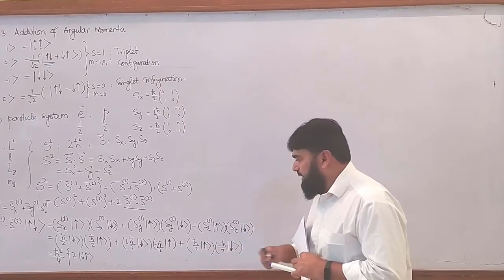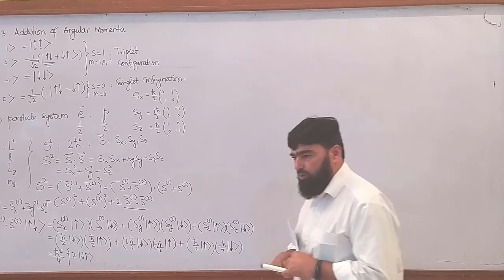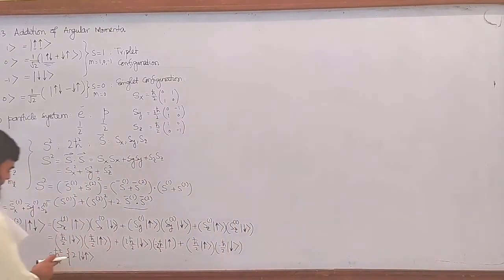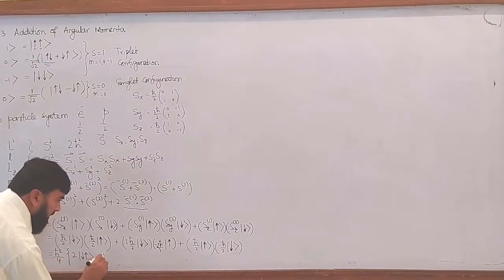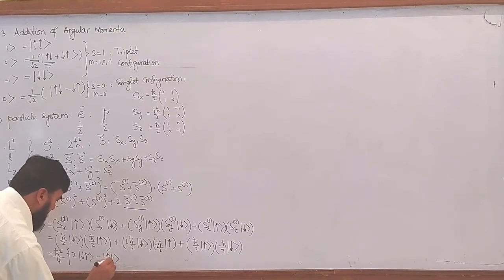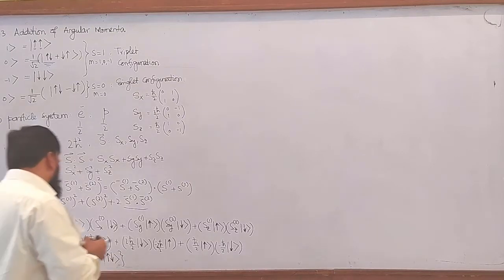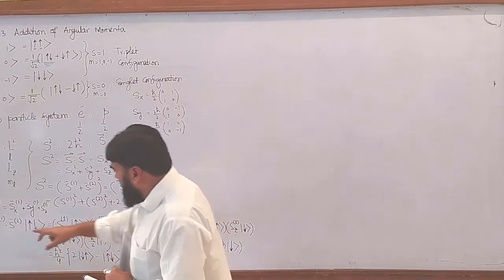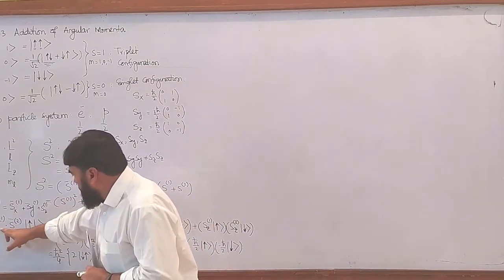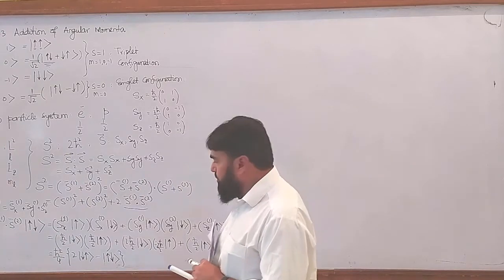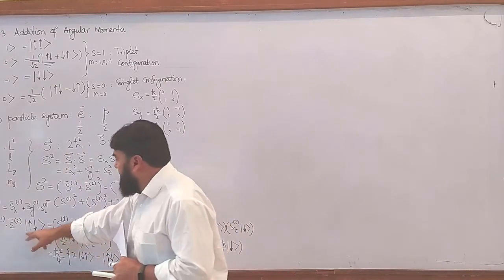Then up-and-down comes in, and I can write 1 over square root of 2 as common factor, with a minus, giving up-and-down. So this is the value of S1·S2 on this state.